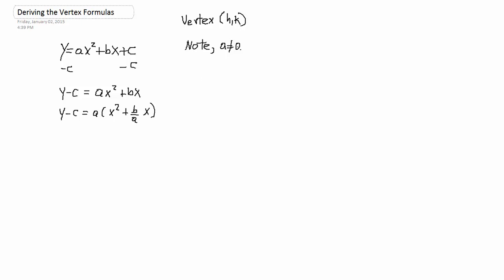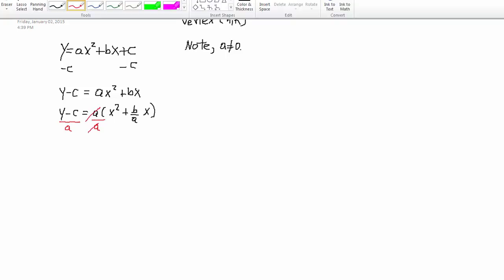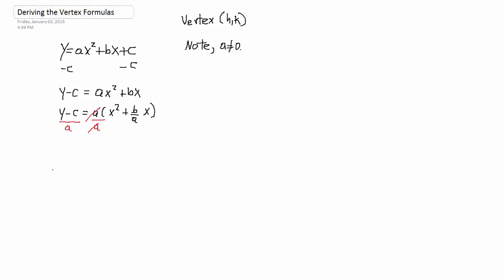So now I will divide both sides of the equation by A. And I can do that because A is not equal to zero. Let me see, divide by A, divide by A, that cancels that. Now, the expression is looking like this. Y minus C divided by A is equal to X squared plus B over AX.